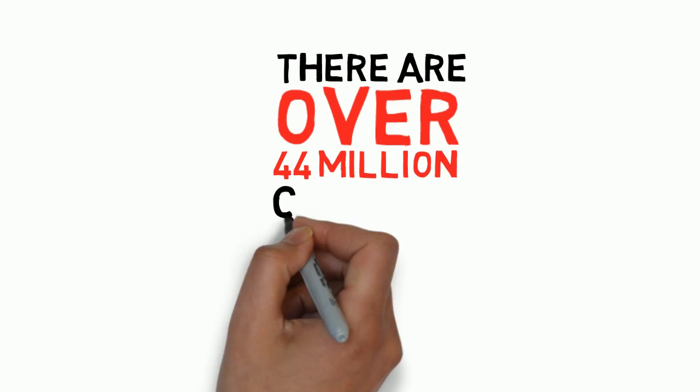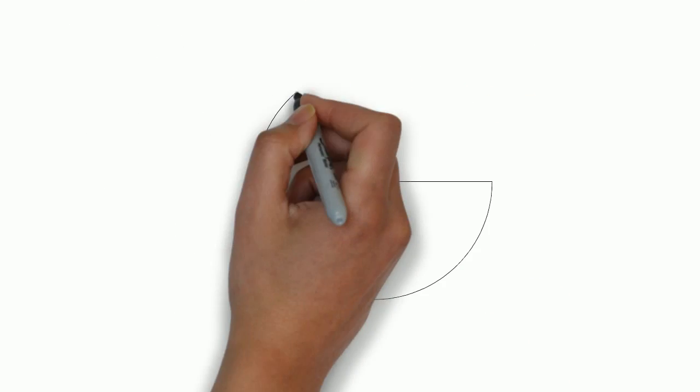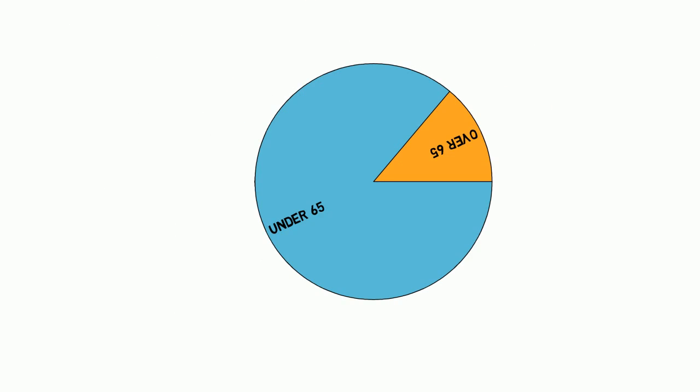Currently, there are over 44 million citizens who are over the age of 65 in the United States. This represents 14% of the population, or one in every seven Americans.